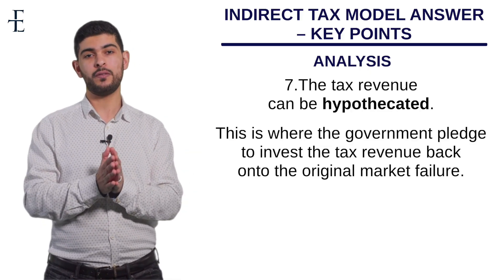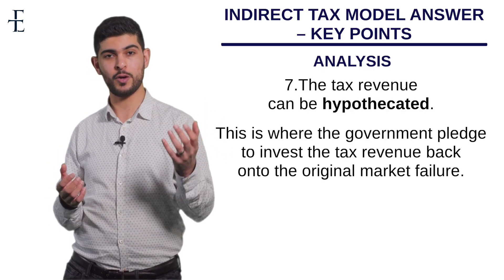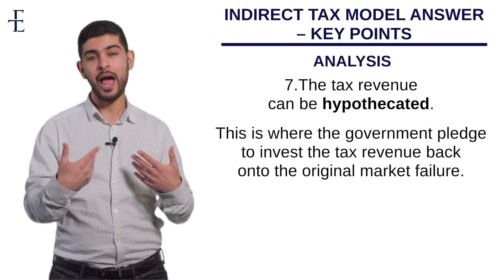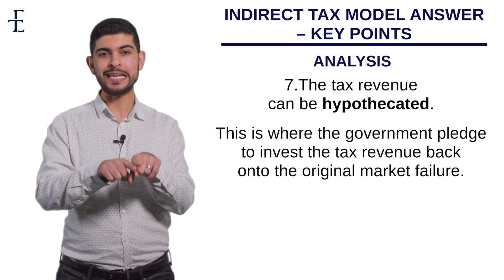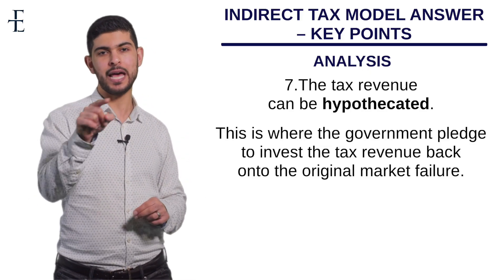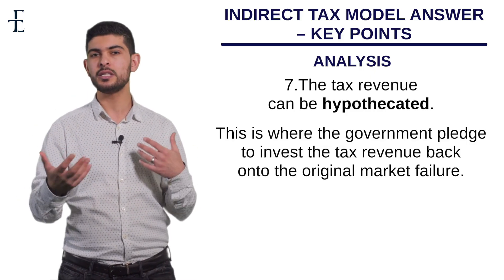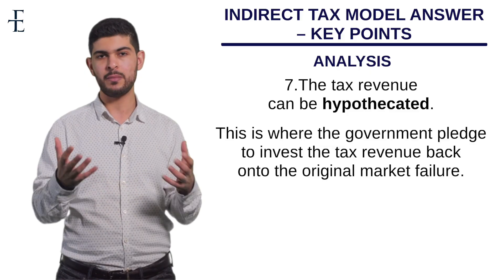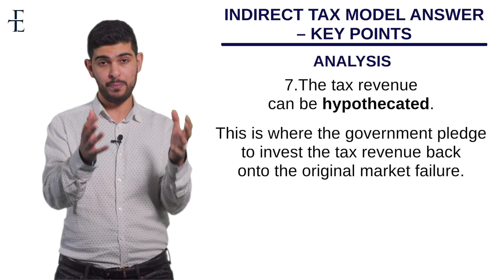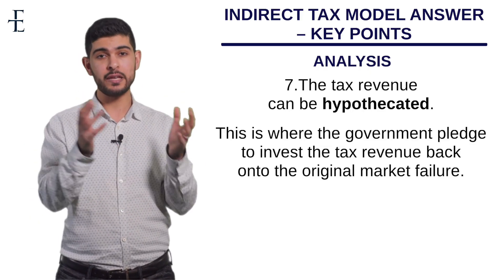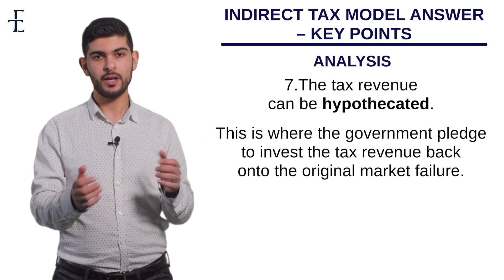You can show off further by bringing in behavioral economics from theme one. Behavioral economics talks about how people are in the habit of doing something. If from a very young age school children are eating healthy meals, that becomes the habit, and as they grow older they're more used to eating healthily — the government doesn't need to worry about massive obesity levels. Talking about hypothecation, giving an example, and linking to behavioral economics makes for incredibly high-level analysis. That's our analysis done.